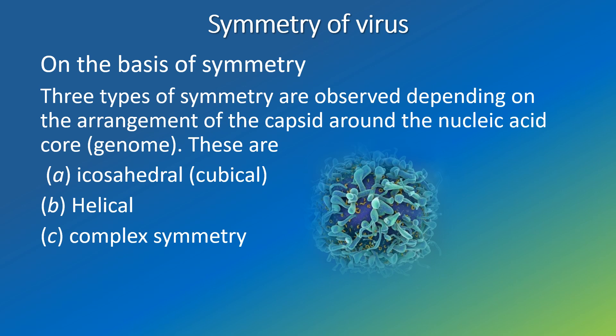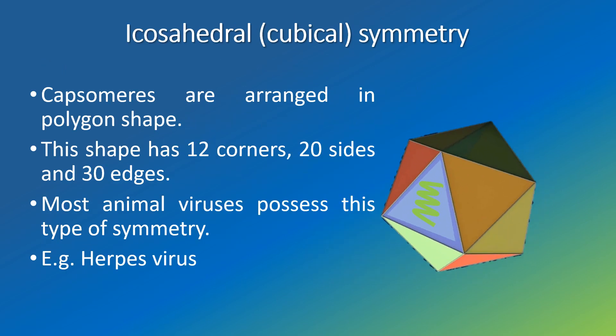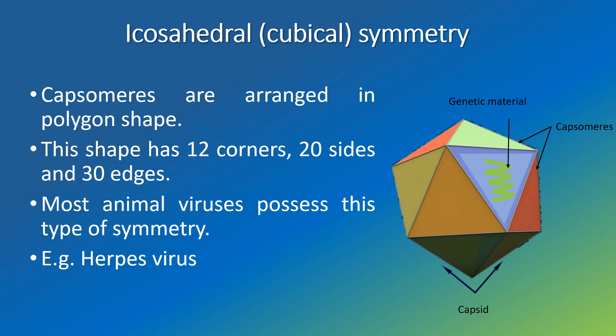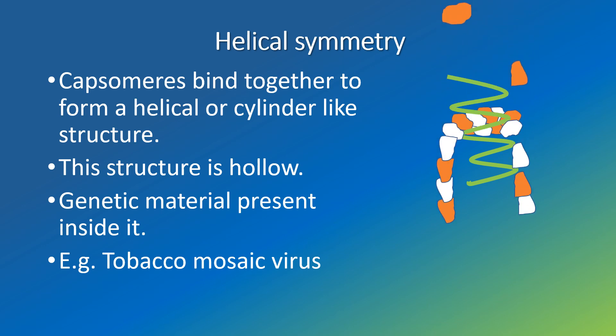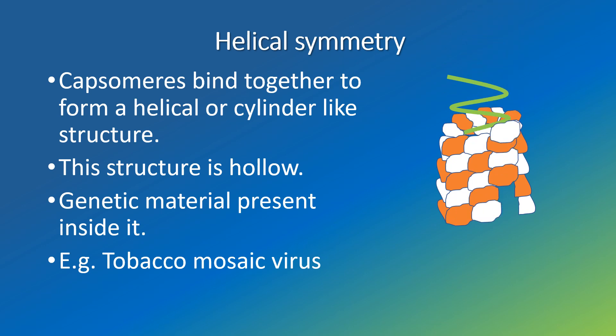On the basis of symmetry, three types are observed depending on the arrangement of the capsid around the nucleic acid core: icosahedral symmetry, helical symmetry, and complex symmetry. Icosahedral or cubical symmetry: when capsomeres are arranged in a polygon shape, that is known as icosahedral symmetry. This shape has 12 corners, 20 sides and 30 edges. Most animal viruses possess this type of symmetry — for example, herpesvirus. Helical symmetry: when capsomeres bind together to form a helical or cylinder-like structure, that is known as helical symmetry. This structure is hollow with genetic material present inside it — for example, tobacco mosaic virus.